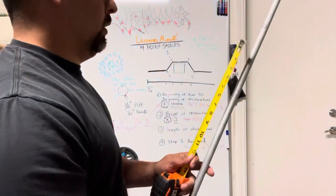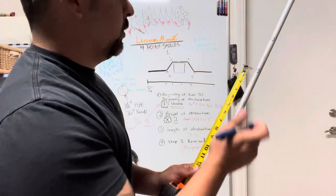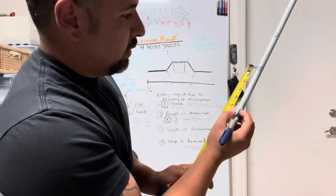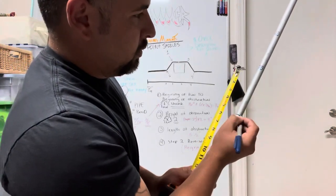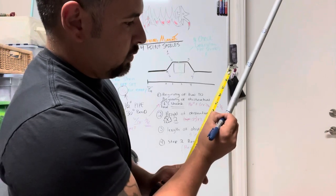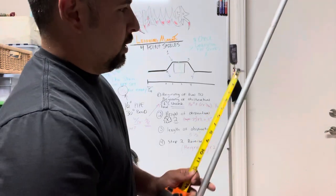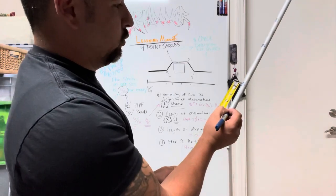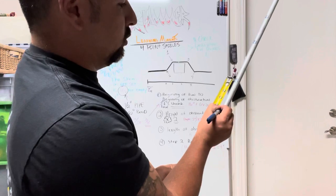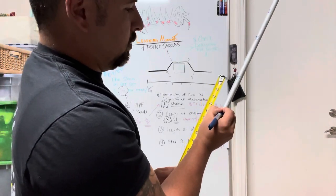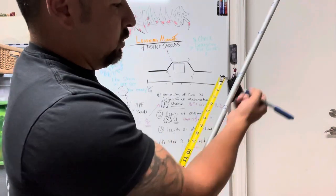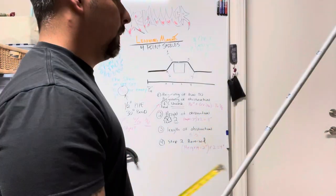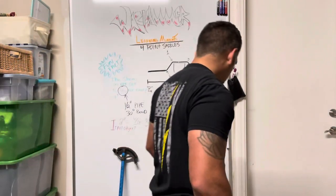And then the length of our obstruction, which is going to be from one to three, which was 5 and a half, that'll be right there. So that's three. And then once again, the height of the obstruction times 2, since we're doing 30 degree bends, which is 4. So 4 inches from three to four.